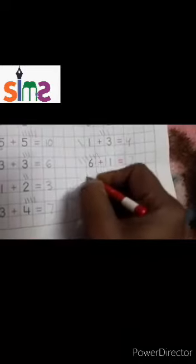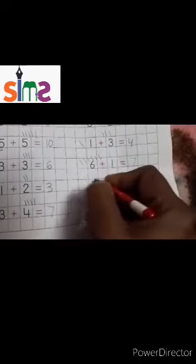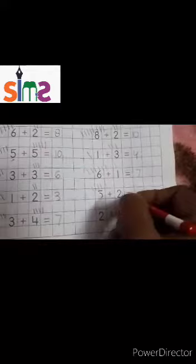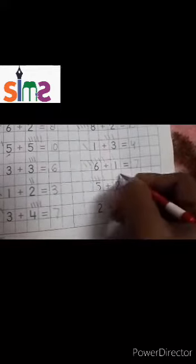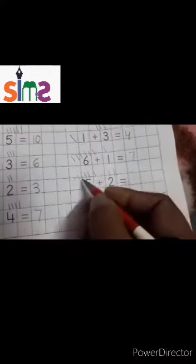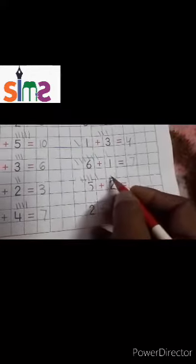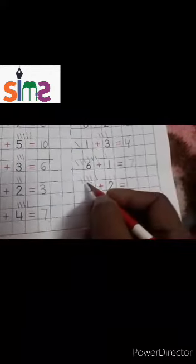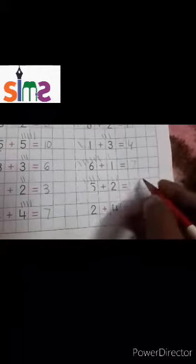Five: one, two, three, four, five. Two: one, two. Count all the lines: one, two, three, four, five, six, seven. So five plus two is equal to seven.